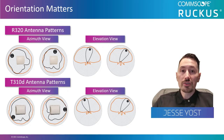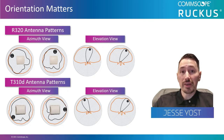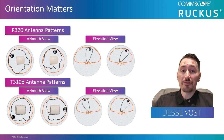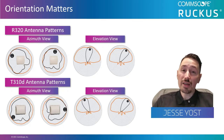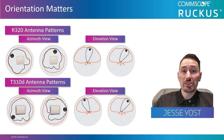You'll notice that under each AP's azimuth view, there are actually two different antenna patterns. These are representing the 2.4 and 5 GHz radios. In this case, they're not much different, so for this discussion we're not going to focus on the differentiation between the two.